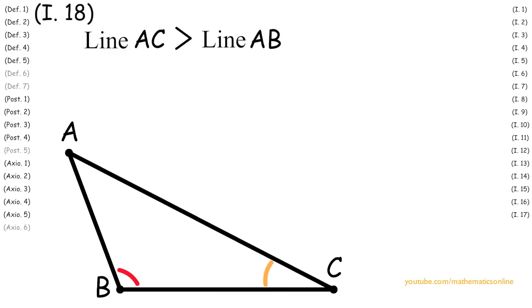First, with line AC and line AB, we apply Proposition 3 so that line AB is congruent to line AD. Next, we create line BD with Postulate 1.